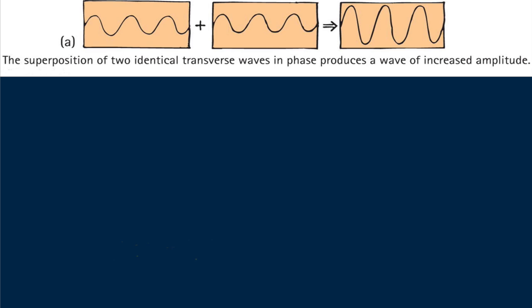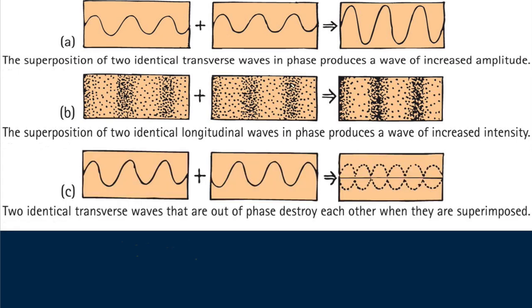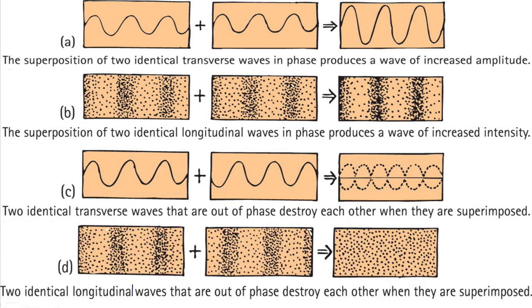Standing waves can be produced with either transverse or longitudinal waves. Here we see a comparison of both types of waves. In either case, when the crests of one wave overlap the crest of another wave, increased amplitude results. Or when the crest of one wave overlaps the trough of another wave, decreased amplitude results. In the case of sound, the crest of a wave corresponds to a compression, and the trough of a wave corresponds to a rarefaction. Interference occurs for all waves, both transverse and longitudinal.